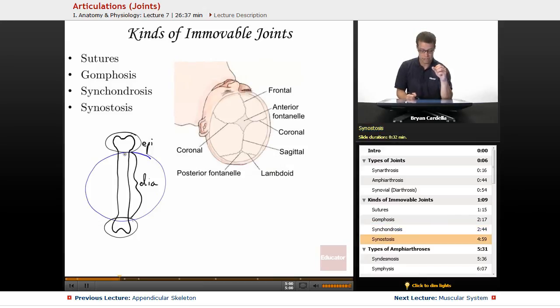And finally, a synostosis is when you have, let's say, this bone and this bone, the two sides of the frontal bone fusing. In an adult, you would no longer see that suture. It's not obvious. When you look at a frontal bone, that suture is gone.